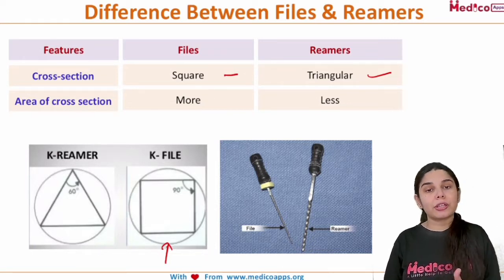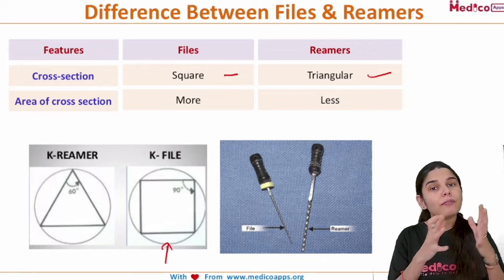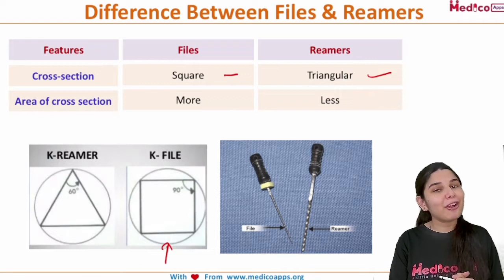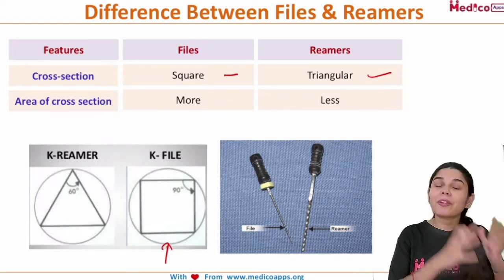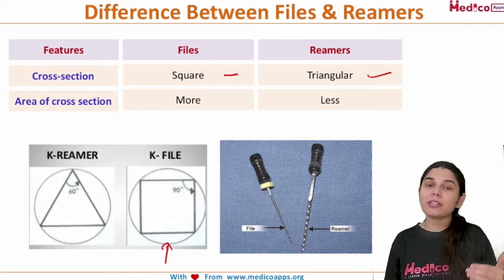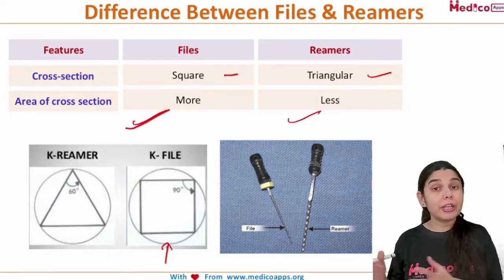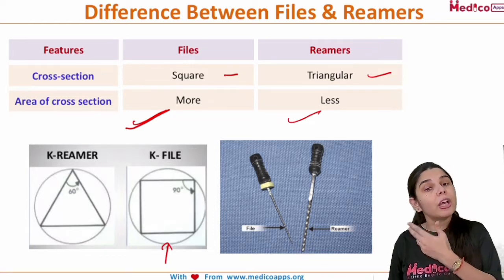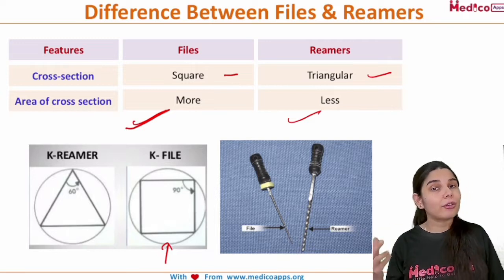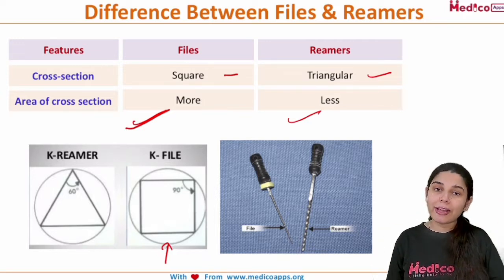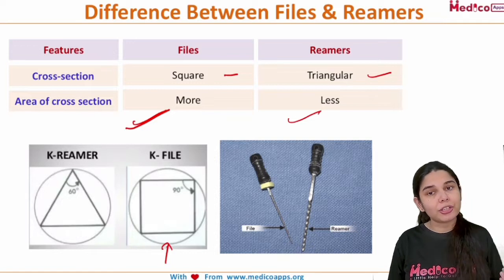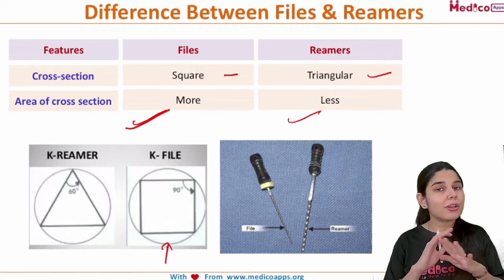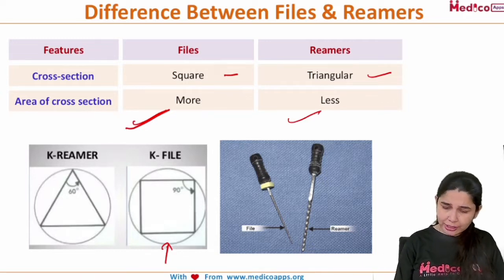The second difference is the area of cross section. The area of cross section of a square will be more than a triangle. So we can say the area of cross section of files is more as compared to reamers, which is less. The first two differences are about the cross section — square for files and triangular for reamers — and because it is square, the area of cross section is more for files and less for reamers.